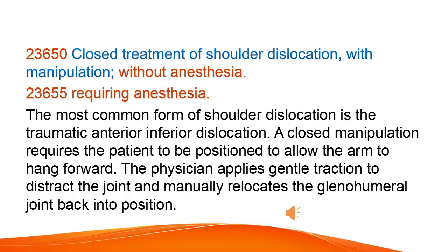Closed treatment of shoulder dislocation with manipulation, without anesthesia, and requiring anesthesia. The most common form of shoulder dislocation is the traumatic anterior-inferior dislocation. A closed manipulation requires the patient to be positioned to allow the arm to hang forward. The physician applies gentle traction to distract the joint and manually relocates the glenohumeral joint back into position.